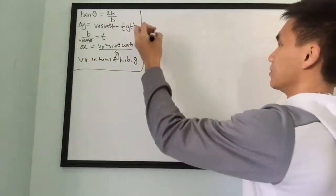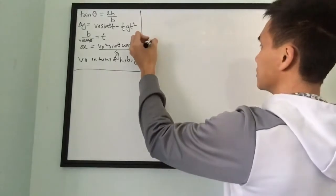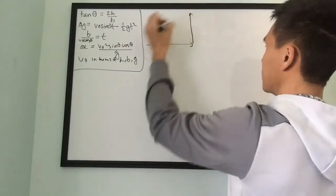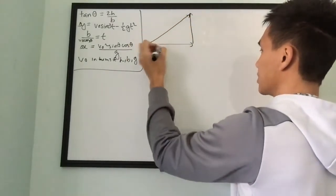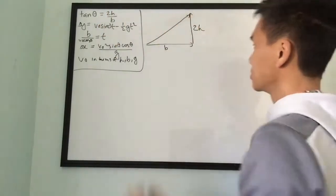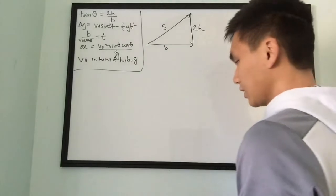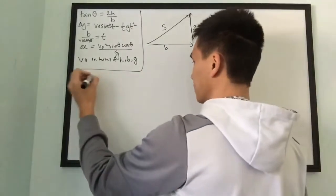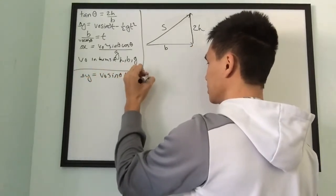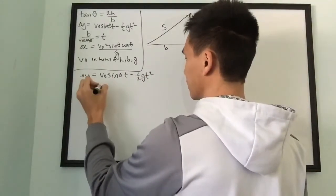We need to redraw the picture to get a visual of what's going on. The displacement will have an x-component b, a y-component — which we found is actually 2h, not h — and a true displacement vector s. So let's hit rewind and start from the beginning. Delta-y equals v-naught·sine(θ)·t minus one-half g·t². Plugging in for t with theta shown in the angle.